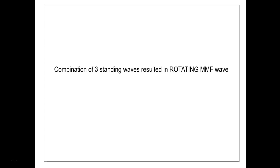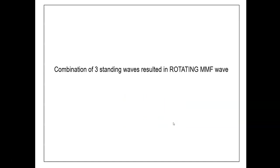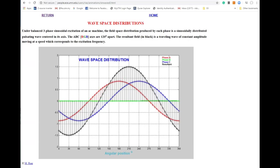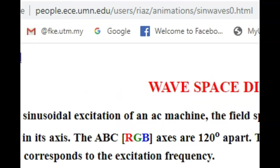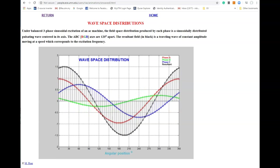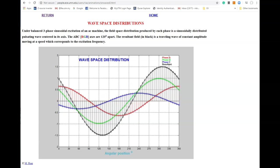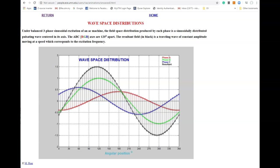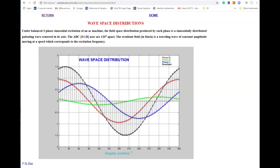If we excite the three-phase windings on the stator with balanced three-phase sinusoidal excitation, each phase produces its own MMF standing wave, and the combination of these three standing waves produces a rotating MMF in the air gap. An animation developed by Professor Riaz from the University of Minnesota illustrates this rotating wave: the three-phase windings produce three standing waves shown in red, green, and blue, and adding these three standing waves produces the resultant wave — shown in black — which rotates around the air gap.